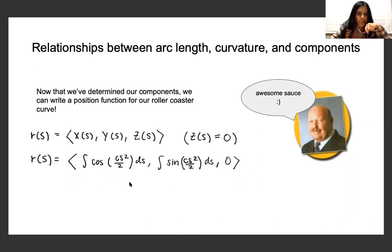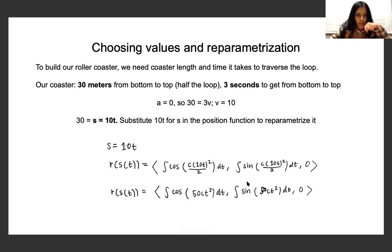So now that we have a position function with respect to arc length, we can use it. We can also re-parameterize it to T if we need to find anything at a particular time. For the purpose of this project, we don't necessarily need to do that. But I've included that information here just to show that it is possible to re-parameterize it to T if needed.